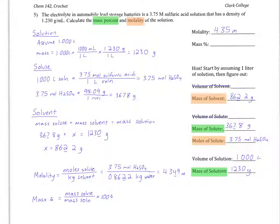For mass percent, I'll divide the mass of the solute by the mass of the solution times 100%. 367.8 grams of sulfuric acid divided by 1,230 grams of total solution times 100% gives me a mass percent of 29.9%.